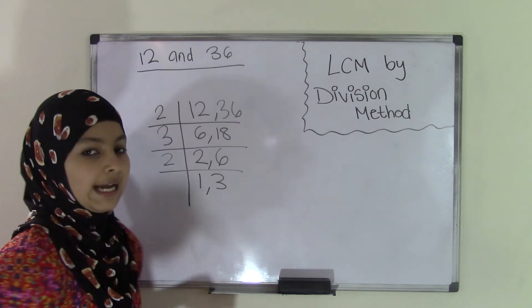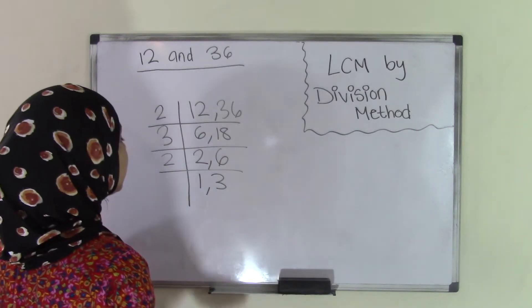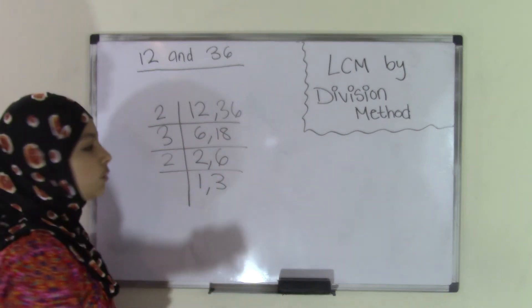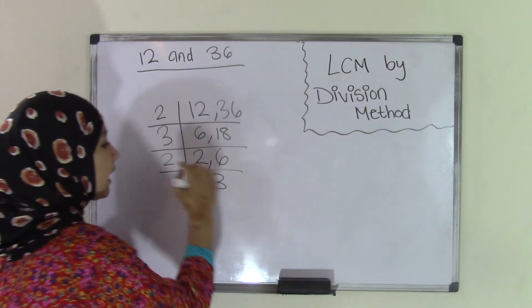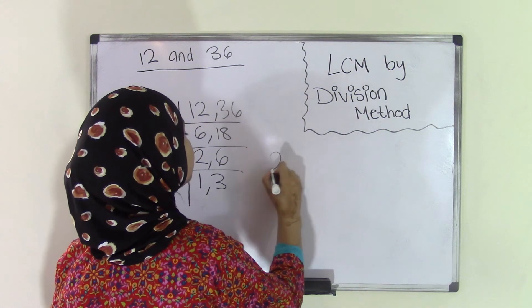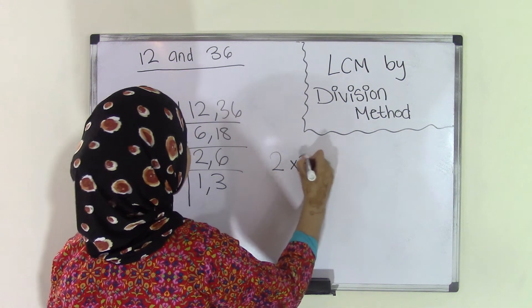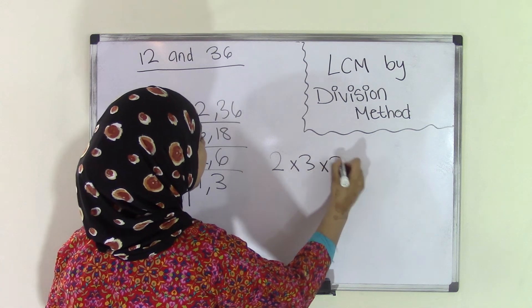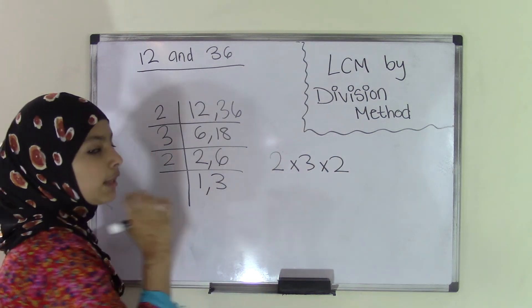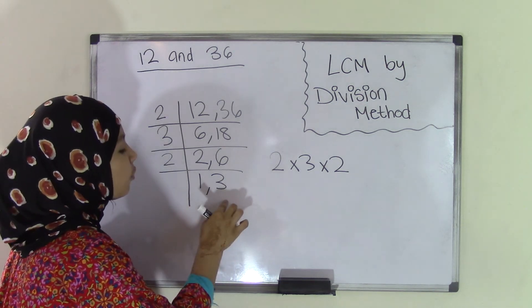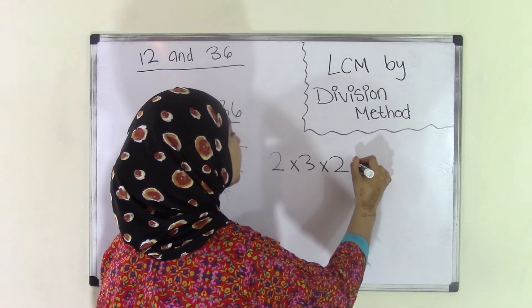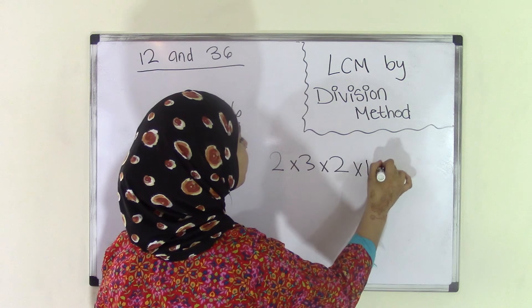Now to find the LCM, we'll take our factors or divisors, which were 2, 3, and 2 again, and list them out: 2 multiplied by 3 multiplied by 2. We also multiply the two numbers we were left with, which were 1 and 3.